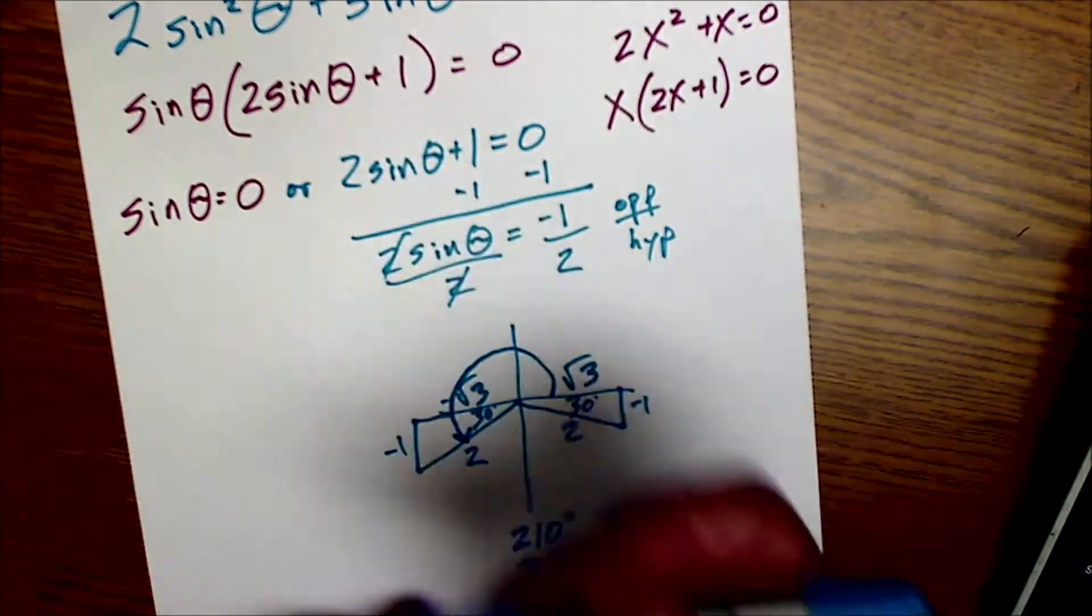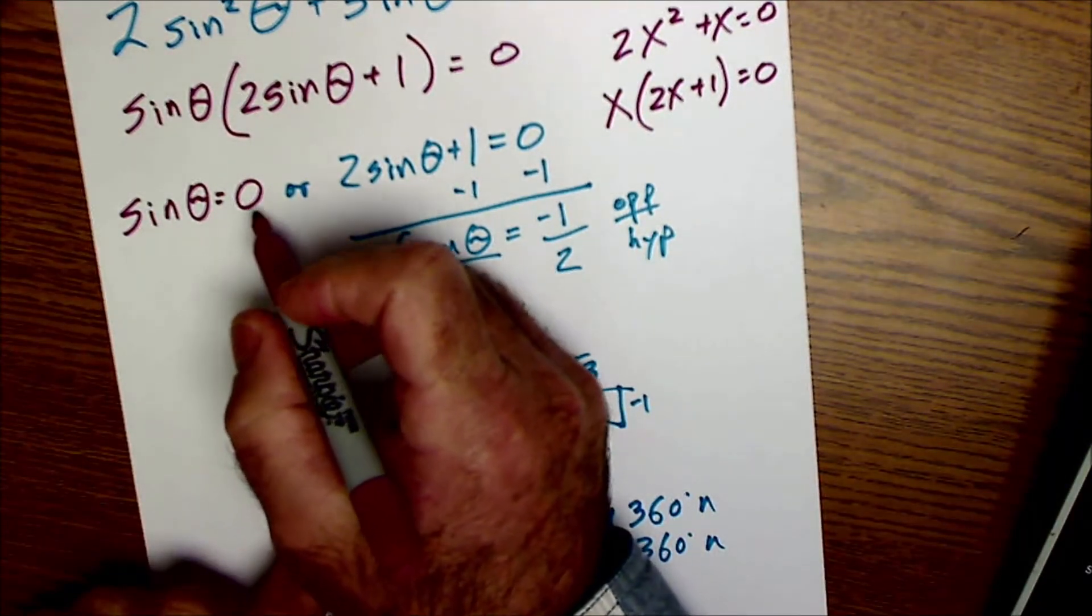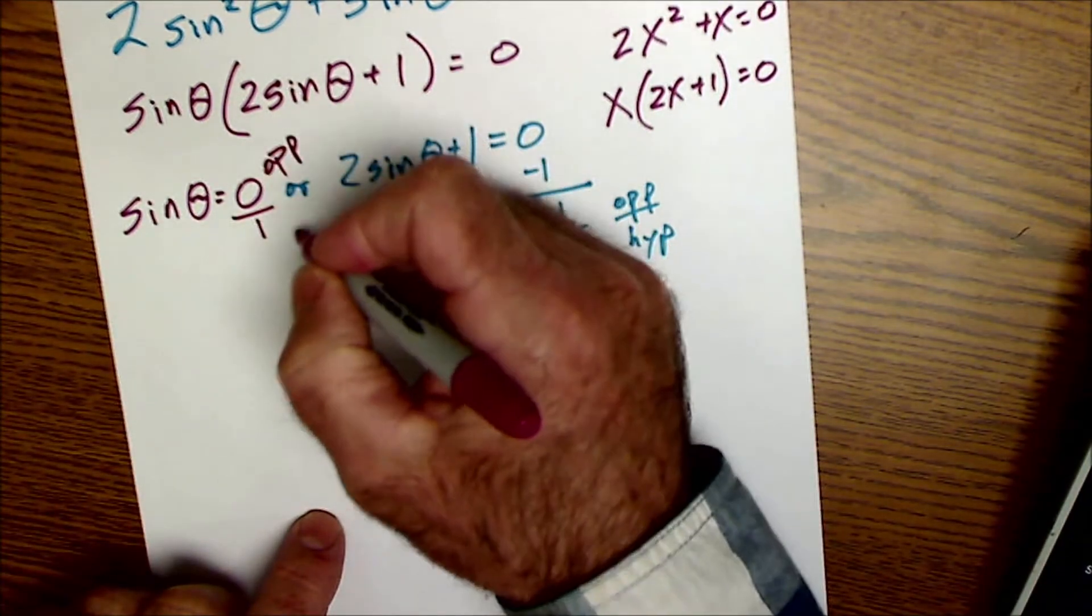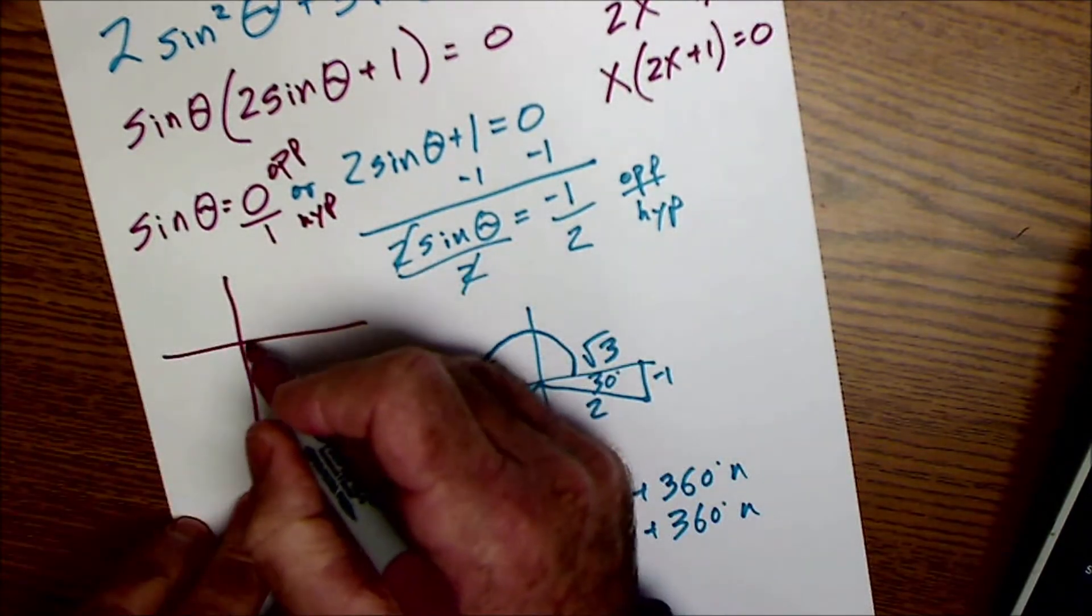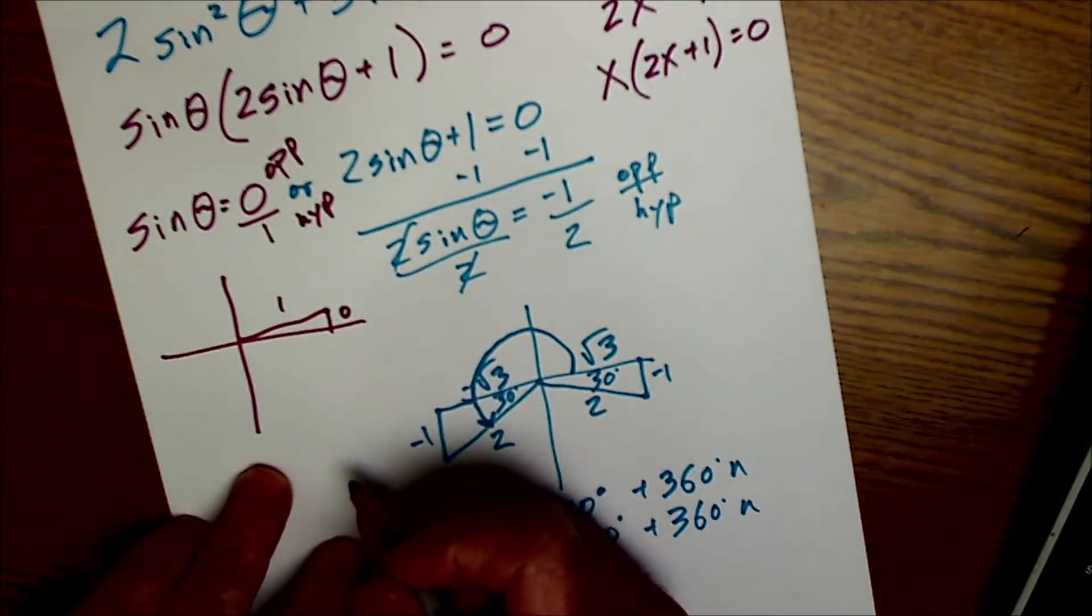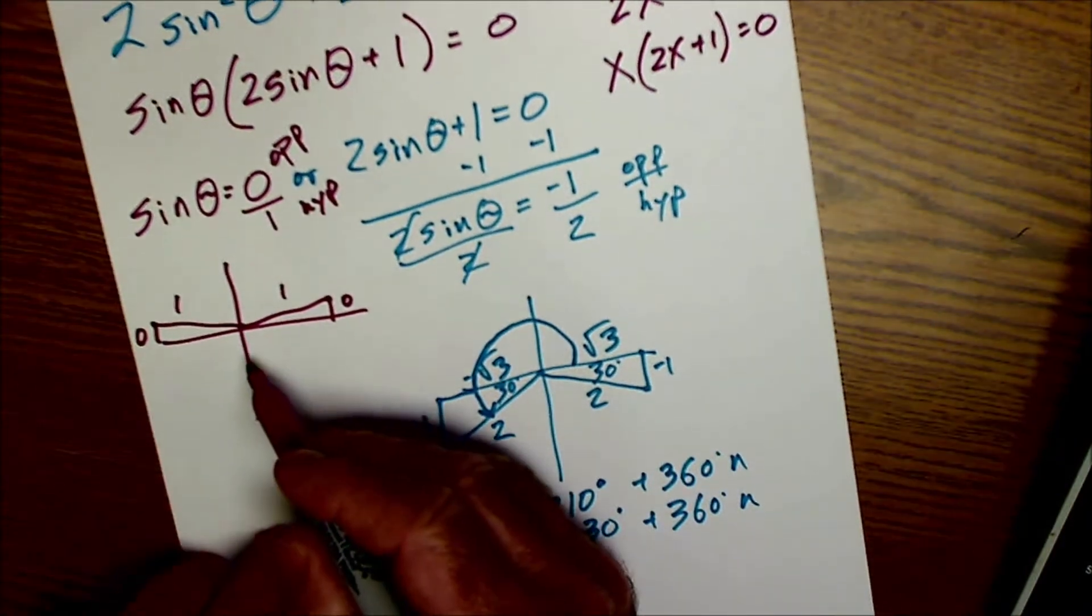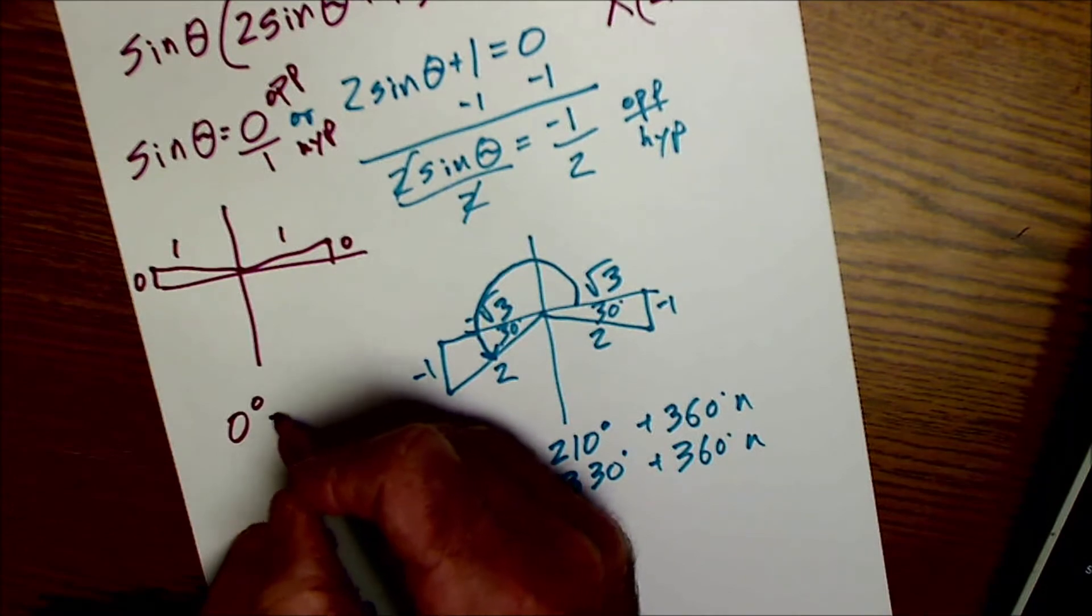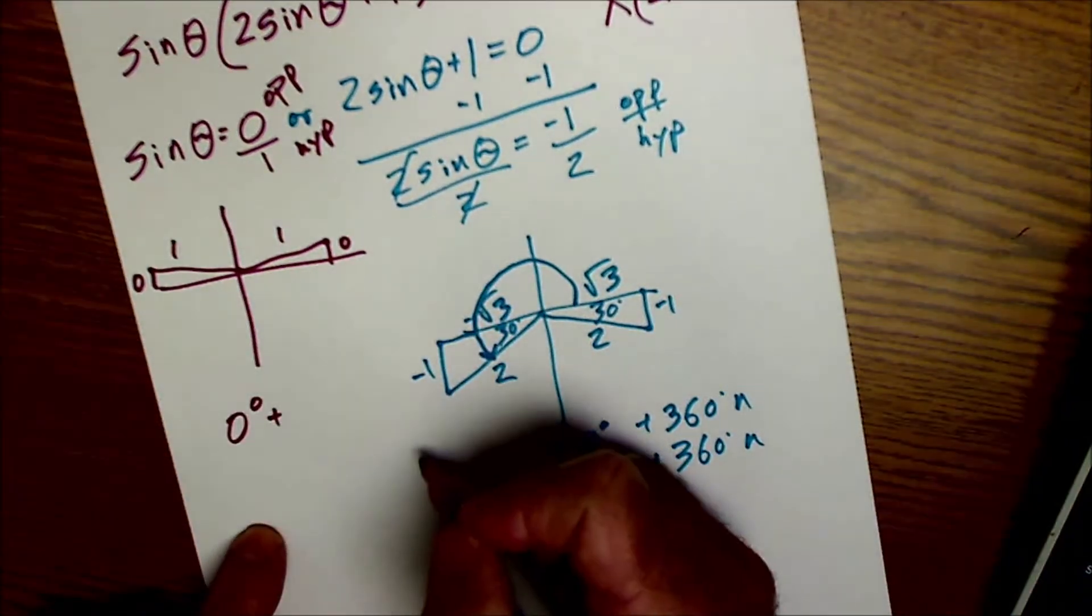Now I need the general solution for that piece. Sine of theta is equal to 0. This is a fraction 0 over 1 where my opposite is 0 and my hypotenuse is 1. That's going to happen right here at 0 degrees. Where the opposite is 0, the hypotenuse is 1. Or over here at 180 degrees. So they're imaginary triangles. Those are my two solutions.